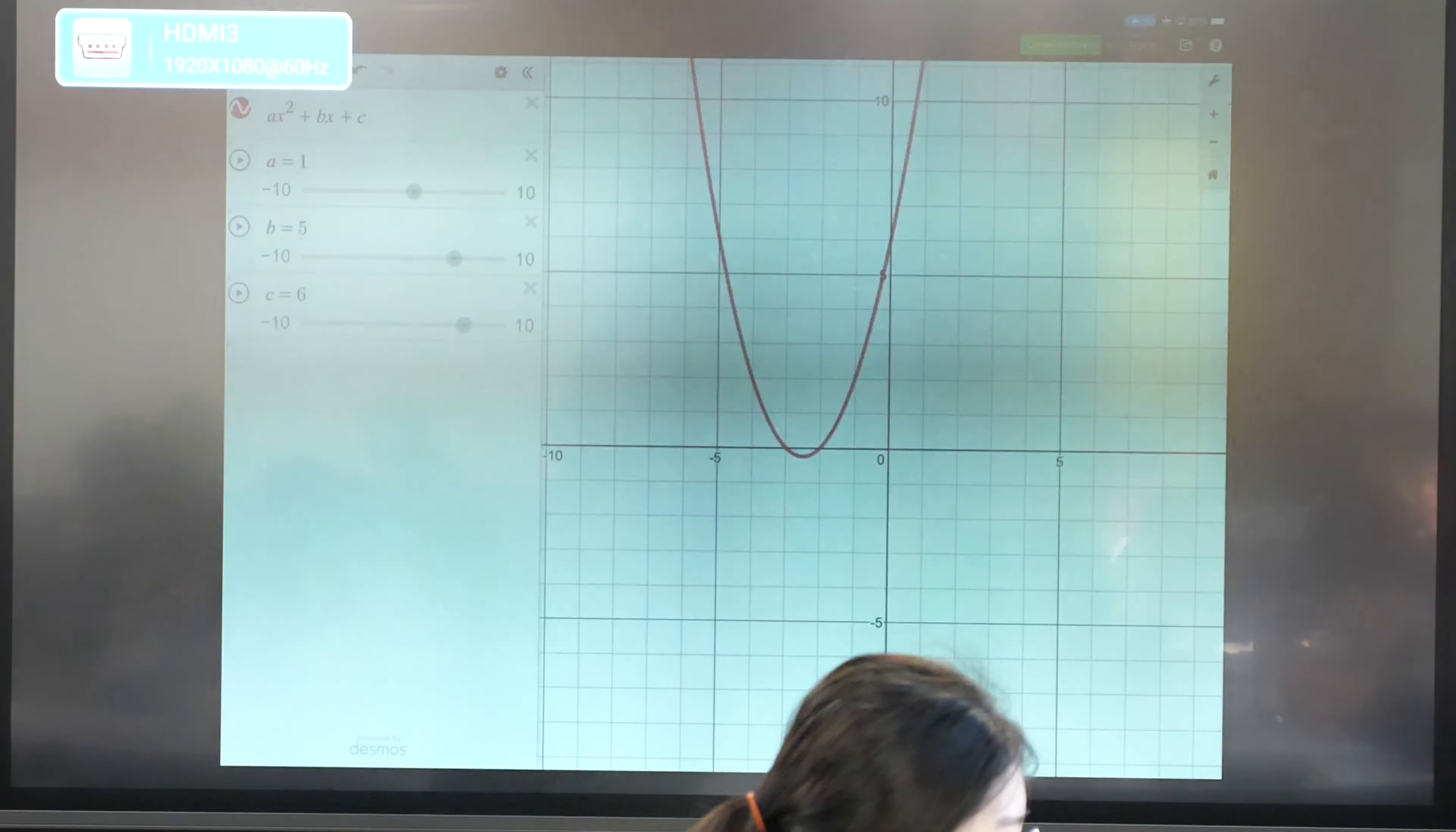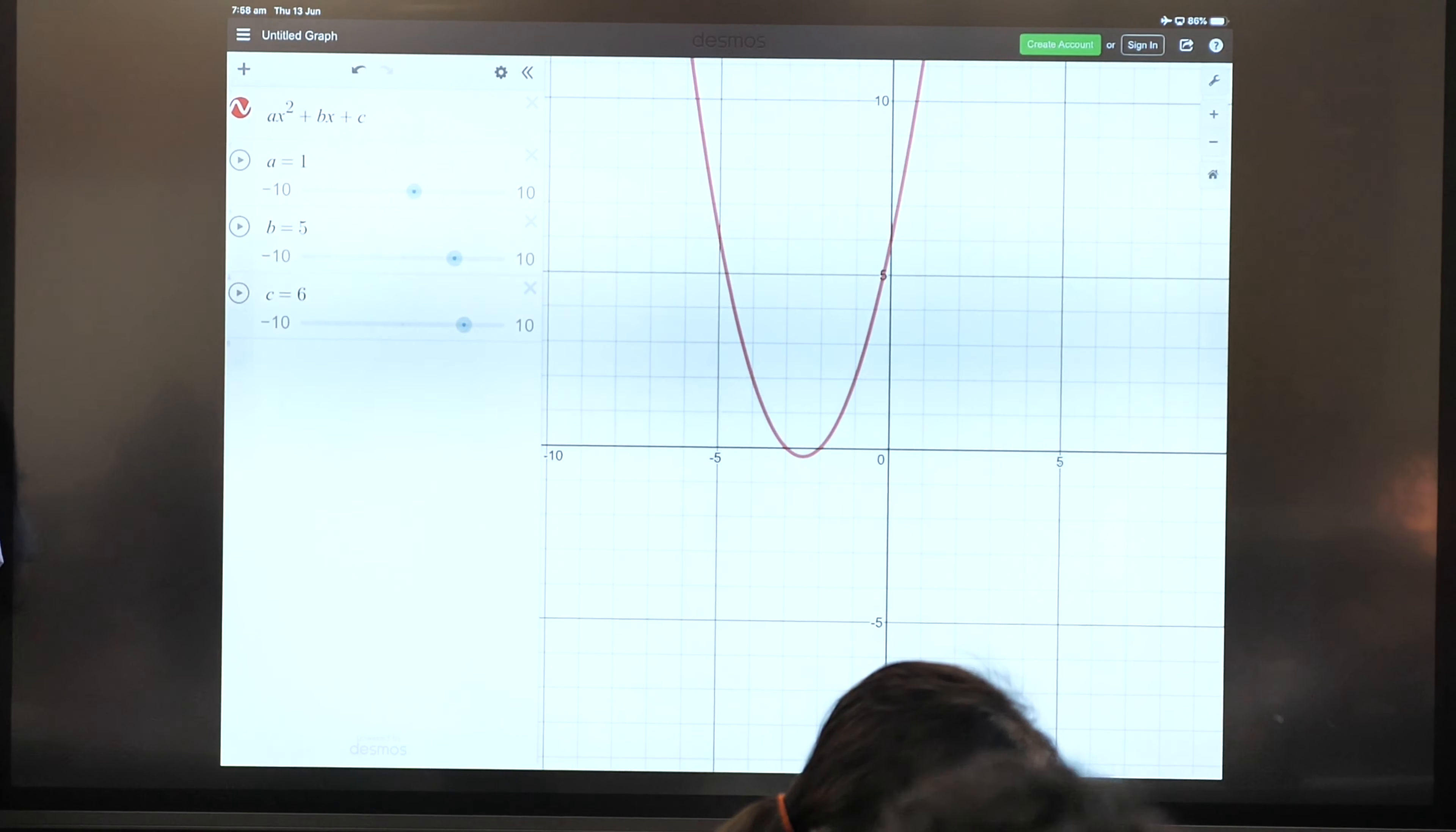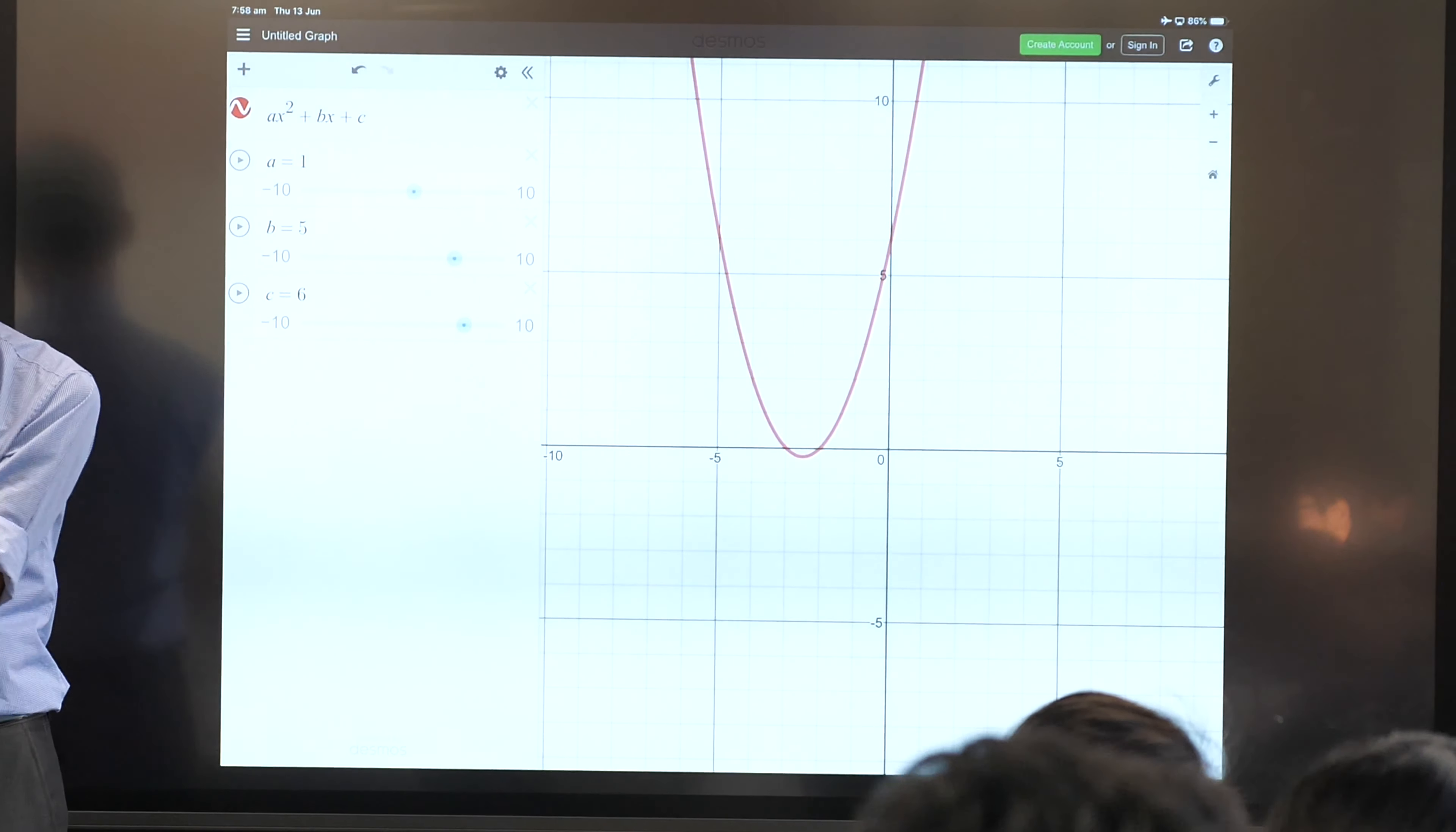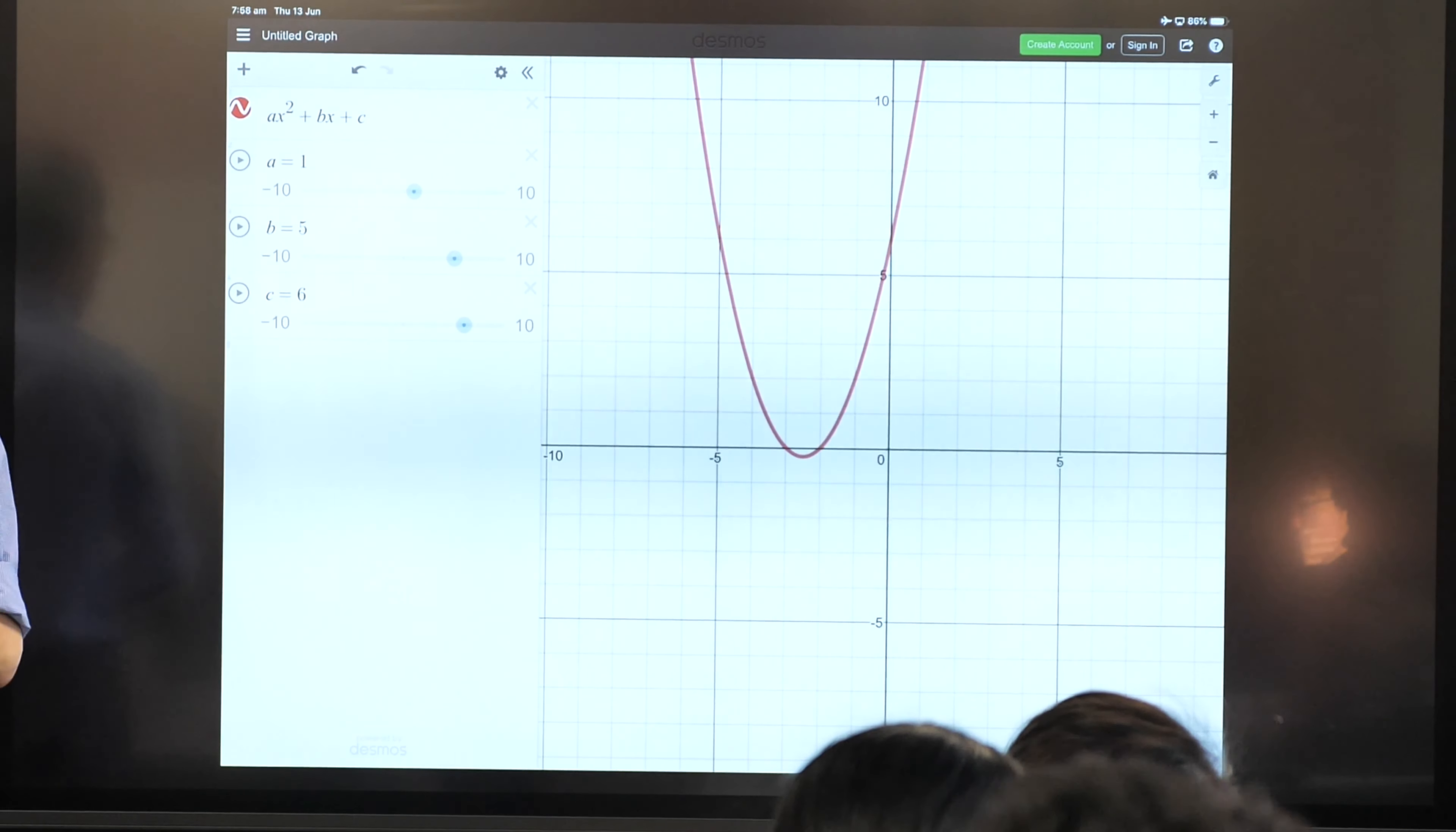What I'd like you to input is this general quadratic that we wrote down, ax squared plus bx plus c. Just pop it in up the top, write it exactly as you can see it there. If you write ax squared plus bx plus c, it should prompt you to add some sliders for a, b and c. Can you hit that, and then you'll get these three sliders that will look more or less identical to what I've got there.